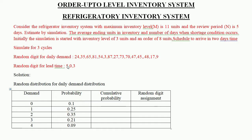The random digits for daily demand are given. The random digits for lead time are also given — three values for three cycles. After completion of the first cycle we add 5, after the second cycle we add 0, and after the third cycle we add 3.